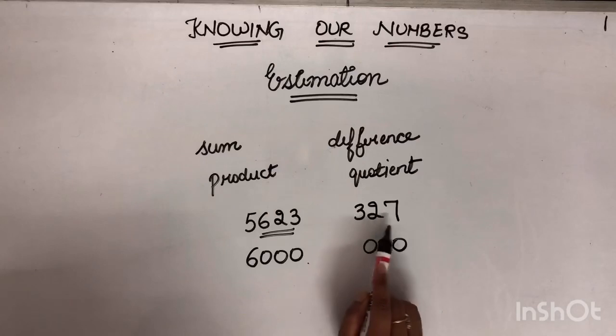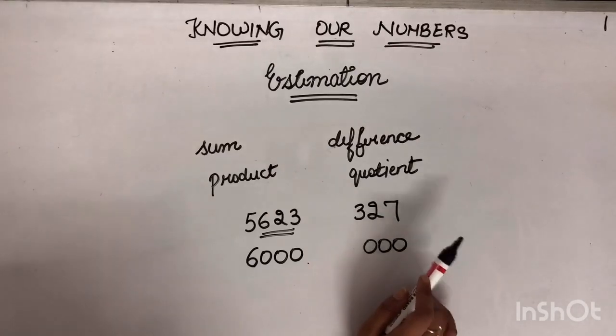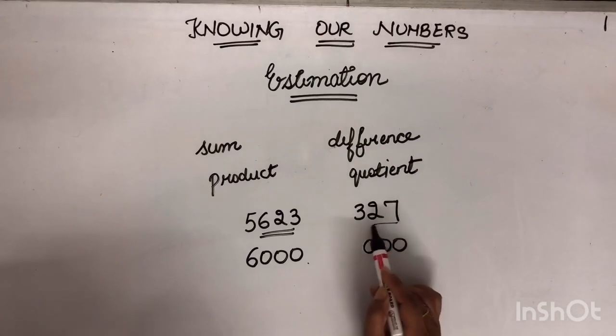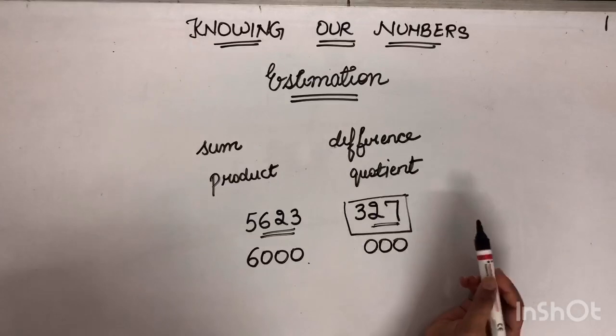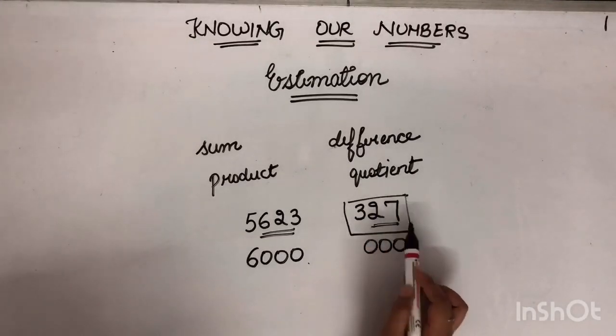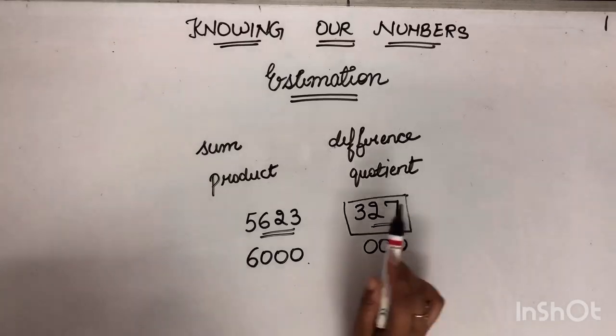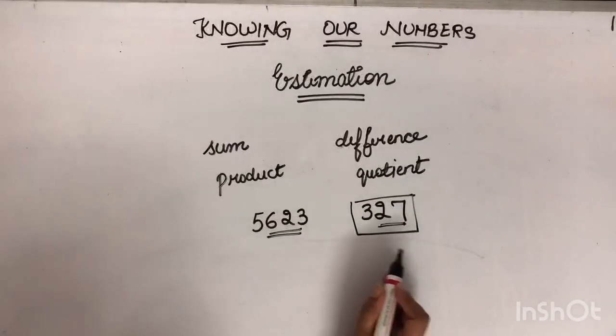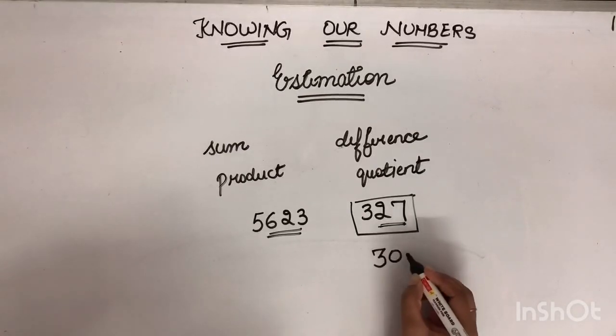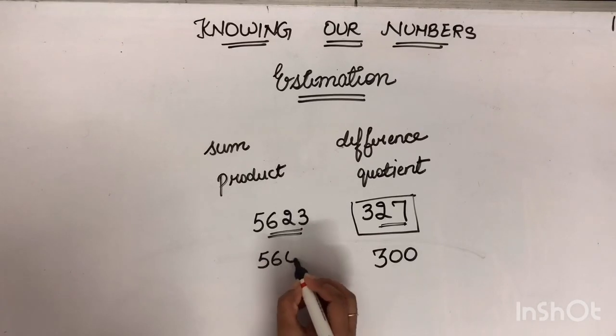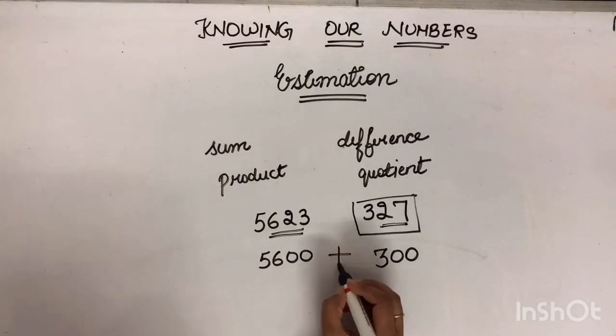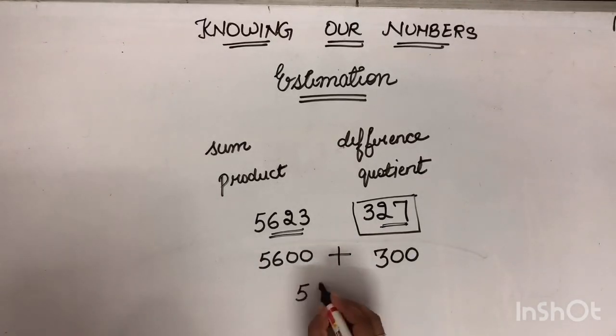So we have to keep in mind that up to which place we have to estimate the number. Toh by looking at this number we can say that the best thing we can do is rounding it off to nearest hundreds. Toh humeisha jab bhi round off karna operations mein you have to decide the place by looking at the smaller number. Always. Smaller number pe aap jo bhi place pe round off karo ge. Usi place pe aap ko greater number ko round off karo. So 327 will become 300. We are rounding it off to 100 place. And this number will become 5600. Now you can add these two numbers. So it will be 5900.